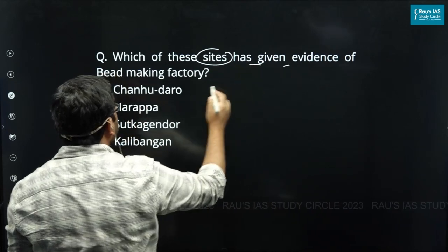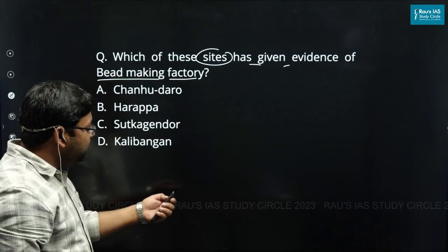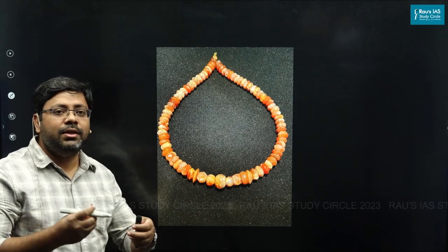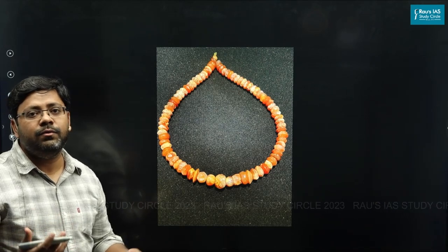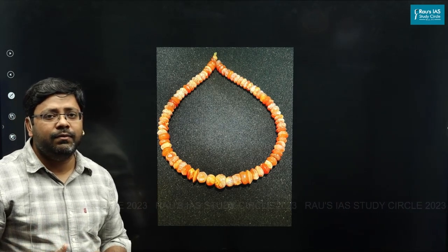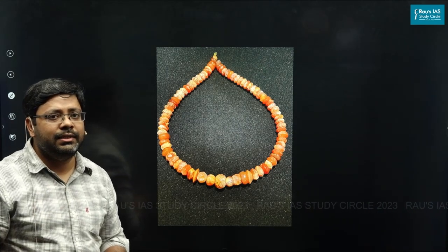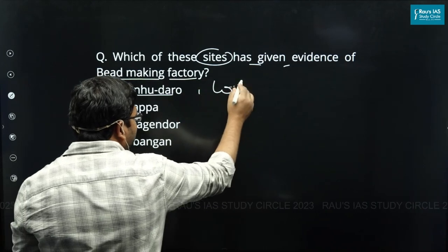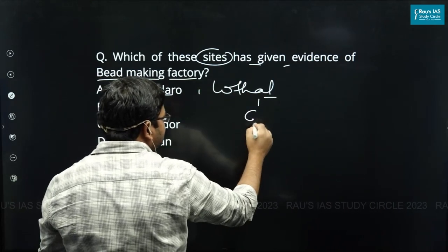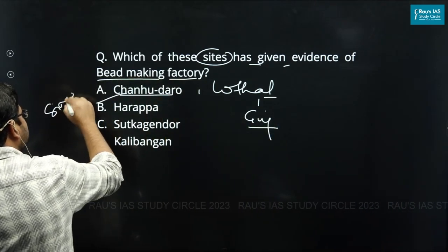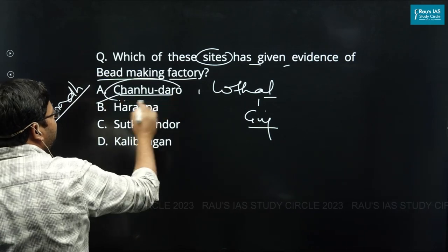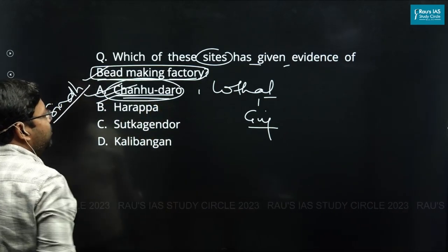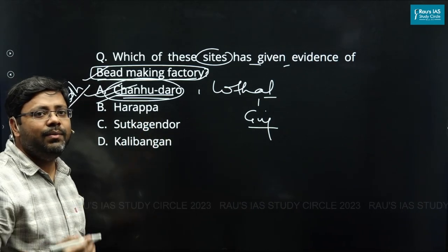The next question asks which site has given evidence of a bead-making factory. The Harappans were excellent bead makers, crafting beautiful necklaces. Two places are very significant: Lothal in Gujarat and Chanhudaro in Sindh, Pakistan. Both have yielded evidence of bead-making factories. The answer here is Chanhudaro, which has given evidence of a bead-making factory from the time of IVC.